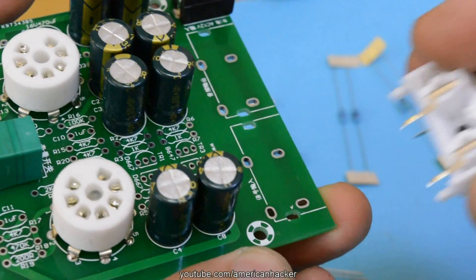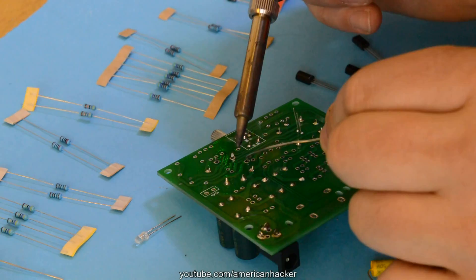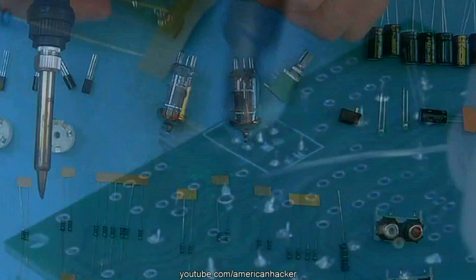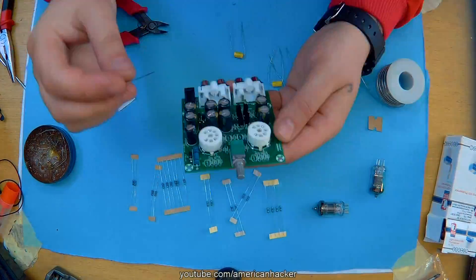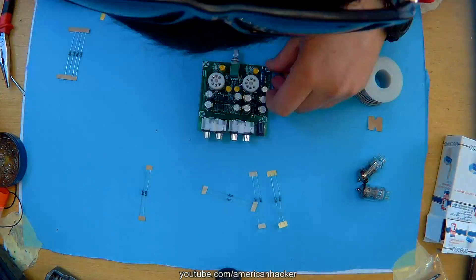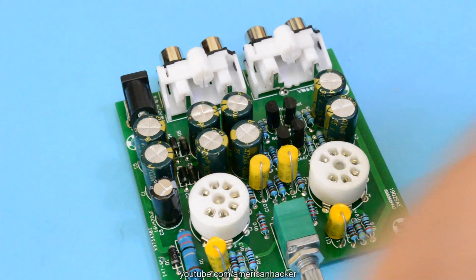I start soldering the parts and here is a short time lapse. For about one hour I have soldered all parts on PCB. And the last step on this PCB is placing the tubes carefully.